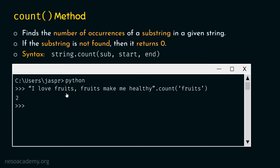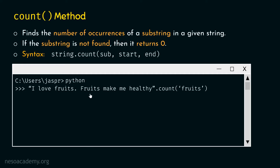The exact match must be there — each and every character must match. This time, we type: 'I love fruits, Fruits make me healthy'.count('fruits'). Here, the second occurrence has a capital F. If we hit enter, we will get one as a result. The first character 'f' in the search substring is not matching with capital 'F' in the string, hence count method returns one.